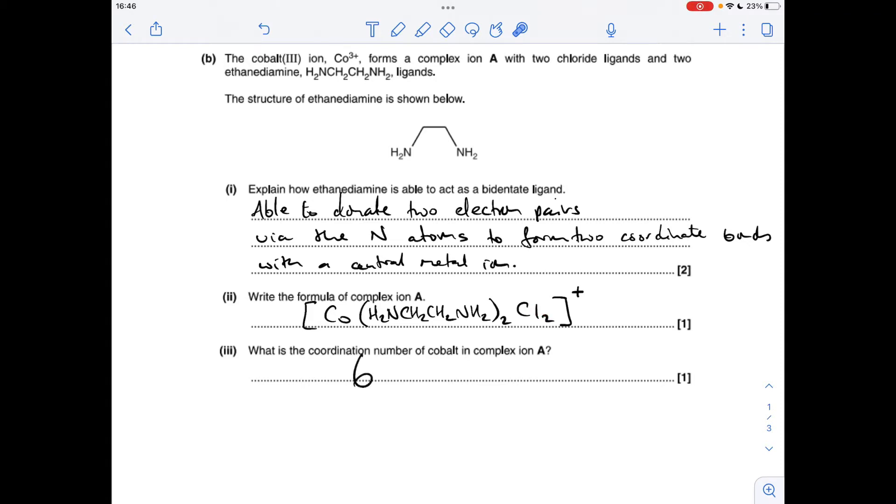The coordination number is six, because coordination number is all about the number of coordinate bonds going to the central metal ion. Each of these ligands puts two coordinate bonds to the cobalt, so there'll be four coordinate bonds from those two ligands and one each from those two, so six altogether.